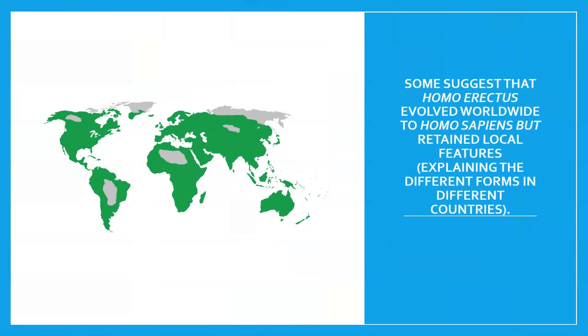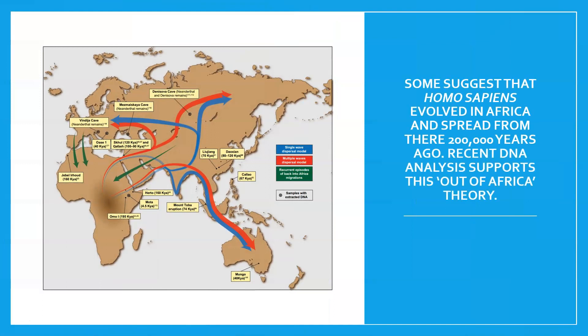Some suggest that Homo erectus evolved worldwide and then evolved into Homo sapiens, retaining local features — which explains the different forms of Homo sapiens in different countries. Others suggest that Homo sapiens evolved in Africa and spread from there around 200,000 years ago. Recent DNA analysis supports this 'Out of Africa' theory. These are our two key theories; at this stage we're only just getting the evidence to support one over the other, and these DNA techniques are only newly developed.